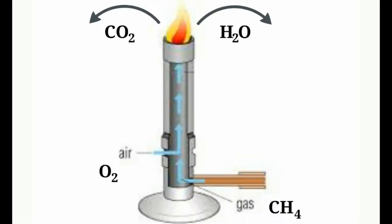When you open up the barrel on a Bunsen burner and turn the flame blue, you're letting in O₂, which increases combustion. However, if you let too much air in or blow on it, you put out the flame because you're adding too much O₂ and that kills the reaction. You want a good balance. The two products coming out of the flame are CO₂ and H₂O.